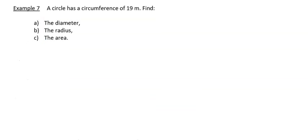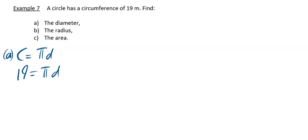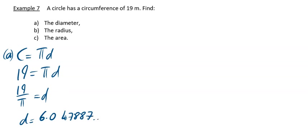This question has three parts: the circle has a circumference of 90 meters - find the diameter, then find the radius, then find the area. It tells us the circumference, so write down the formula C = πd. I'm using πd because the first thing we want to find is the diameter. Fill in what you know: circumference is 90, so 90 = πd. Pi is multiplying d, so when pi goes across it divides: 90 divided by pi equals d. Do that on your calculator and you get 6.047887... Give your answer as 6.05 centimeters to 2 decimal places.